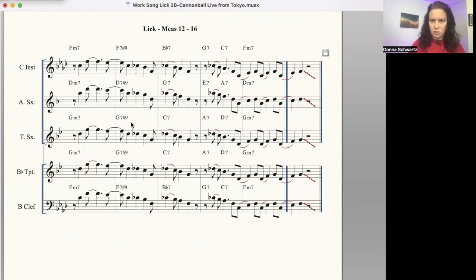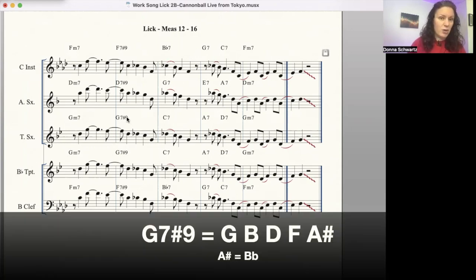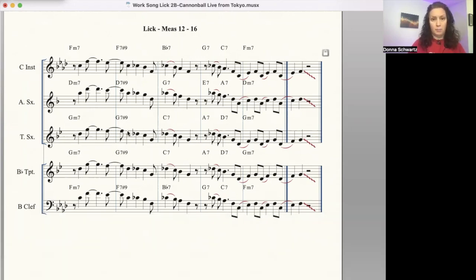In the next measure, let's go over the chord tones, G7 sharp 9. Think of it as the lowered third. B flats would work over here. The F, the D, the B natural, because it's G7, that's the third, and the G.